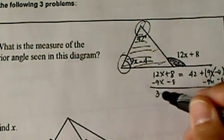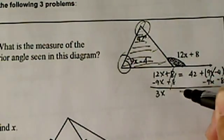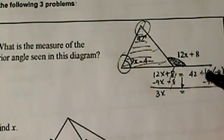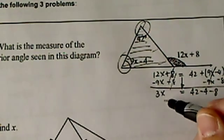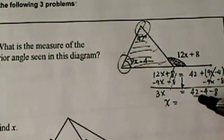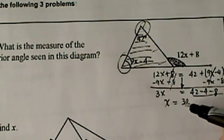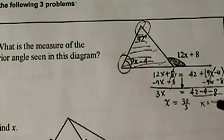So basically, I'm moving the 9x over. I have 3x equals to 42 minus 4 minus 8. And you can see x is equal to, here's the 30 here on this side. So it's 30 divided by 3, or x equal to 10.